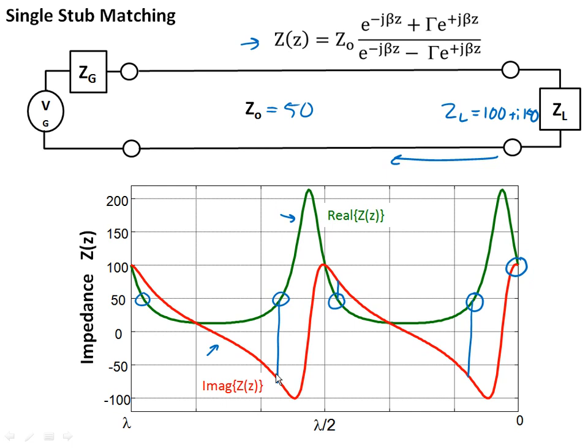But what if we could put on a stub to cancel out that imaginary part? That would solve our problems. In fact, that's what single stub matching is. It's putting on a stub to get rid of the reactance, the imaginary part of the impedance, and you put on the stub at a point where you're going to get the right real impedance.